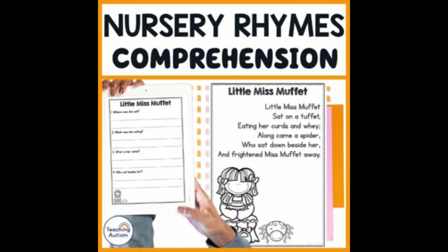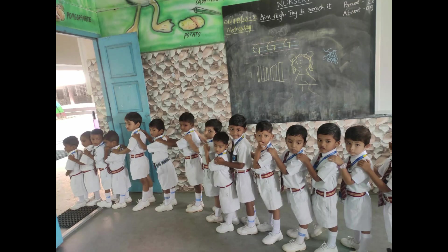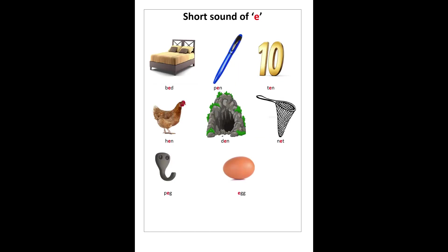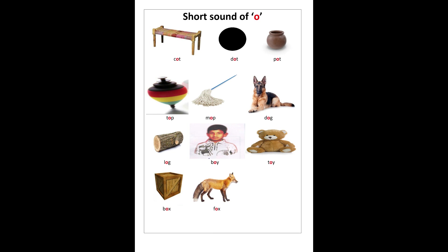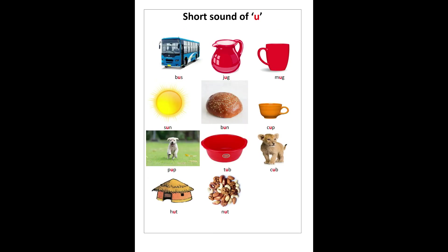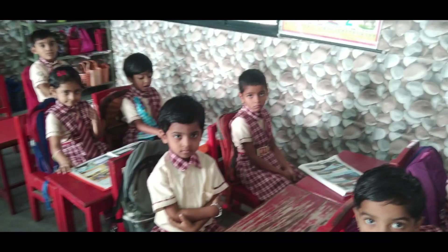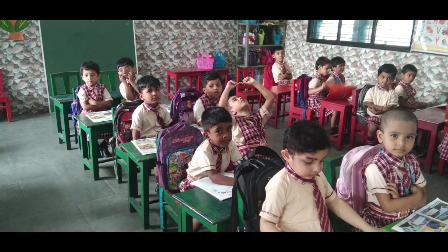Comprehension is developed by understanding and giving answers to simple questions based on the textbook, obeying commands and following instructions. Picture reading involves recognizing and naming pictures, and associating the picture name with the letter it starts with and vice versa. Recognition of capital and small letters — reading, writing and dictation of letters and words.